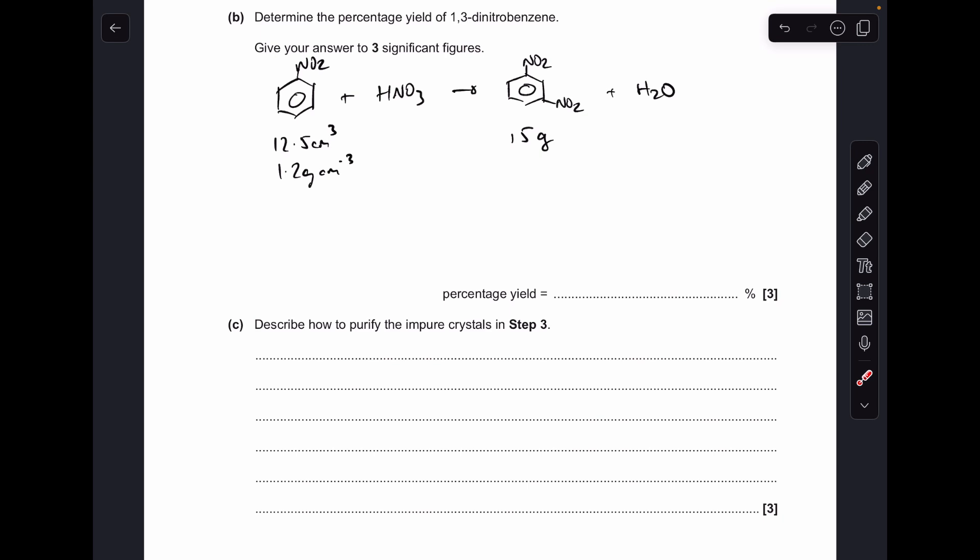Moving on to the percentage yield calculation. So I've just drawn up the overall reaction equation there just to help explain the calculation. You didn't need to do that. So we've got 12.5 cm cubed of nitrobenzene to start with and we're told its density 1.2 grams per cubic centimetre. And we're also told that we made 15 grams of the product. So the first thing we need to do is use the volume and density to calculate the mass of nitrobenzene. So we just multiply the volume by the density and we get the mass which is coming out as 15 grams.